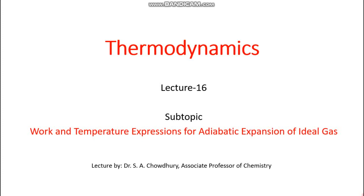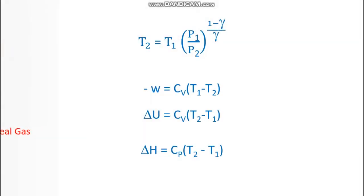Hello everyone, we are in lecture number 16 of thermodynamics and our today's topic is work and temperature expressions for adiabatic expansions of ideal gas. Let's move on to the equations which were derived in the earlier lectures. These four equations were derived earlier: the expression of final temperature, the expression of work done, the expression of internal energy change, and the expression of enthalpy change. All expressions in these three are applicable for both reversible and irreversible changes for adiabatic expansion of an ideal gas.